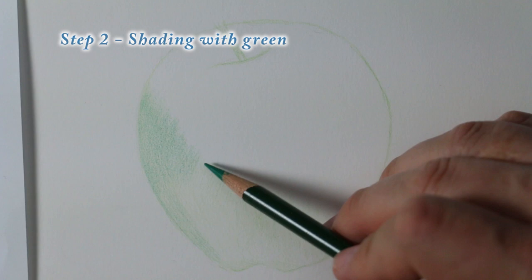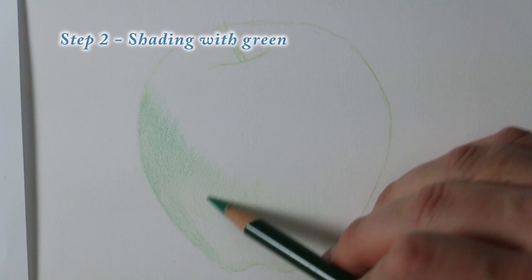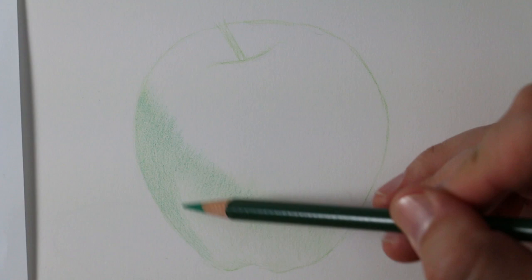I'm shading with green in that set of pencils and I used Stonehenge white. It's a 90 pound paper. It's 100% cotton acid-free. I like it a lot for colored pencil. It's a very good paper.